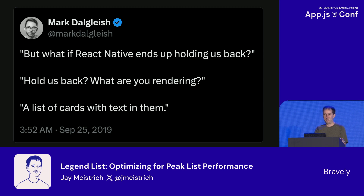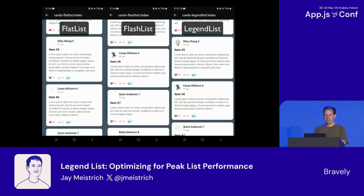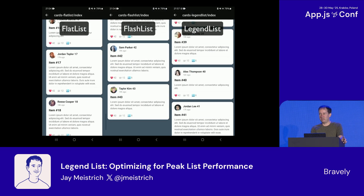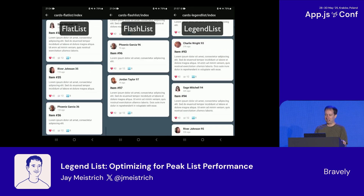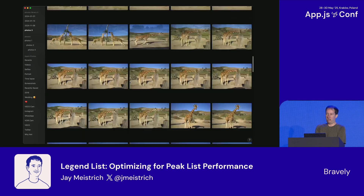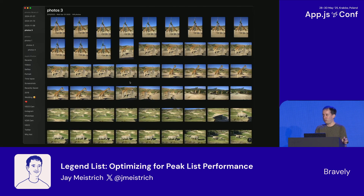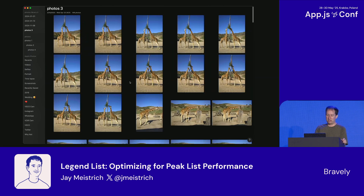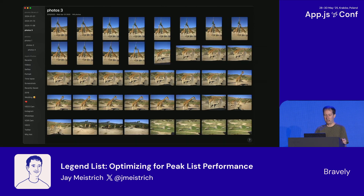How hard could that be, right? So it turns out it was pretty hard. I almost gave up at least a dozen times. But after a lot of experimenting, I finally cracked it. LegendList is faster than FlashList, and of course a lot faster than FlatList. It's 100% JavaScript, so it works on any platform. My original prototype used my other library, Legend State, but I made a tiny signaling system for it, so there are no dependencies at all.